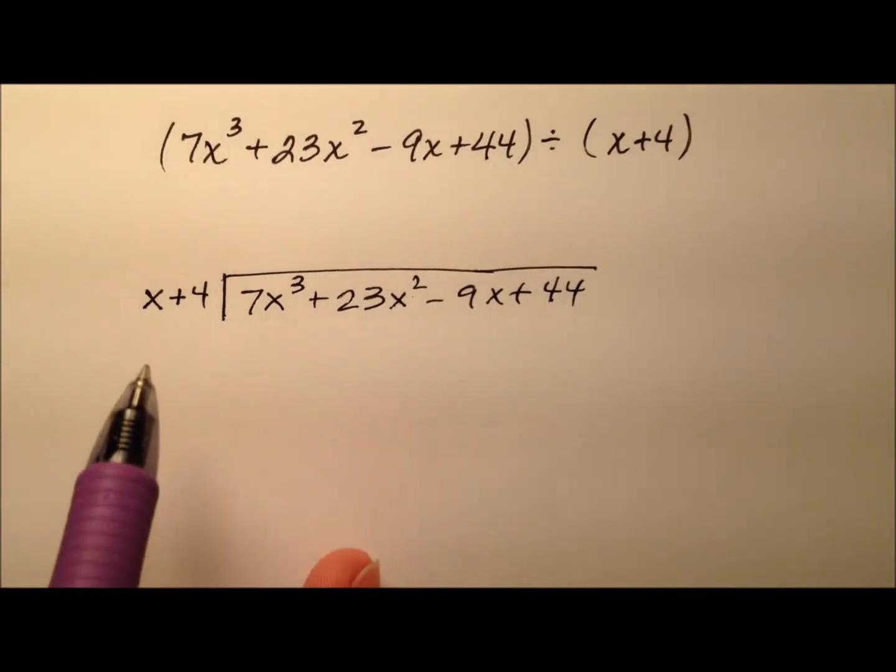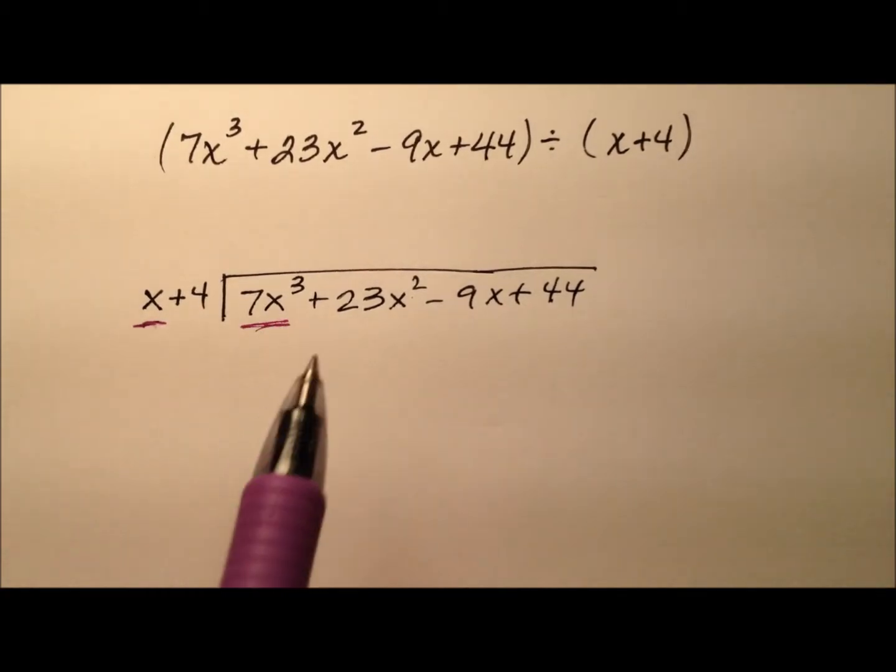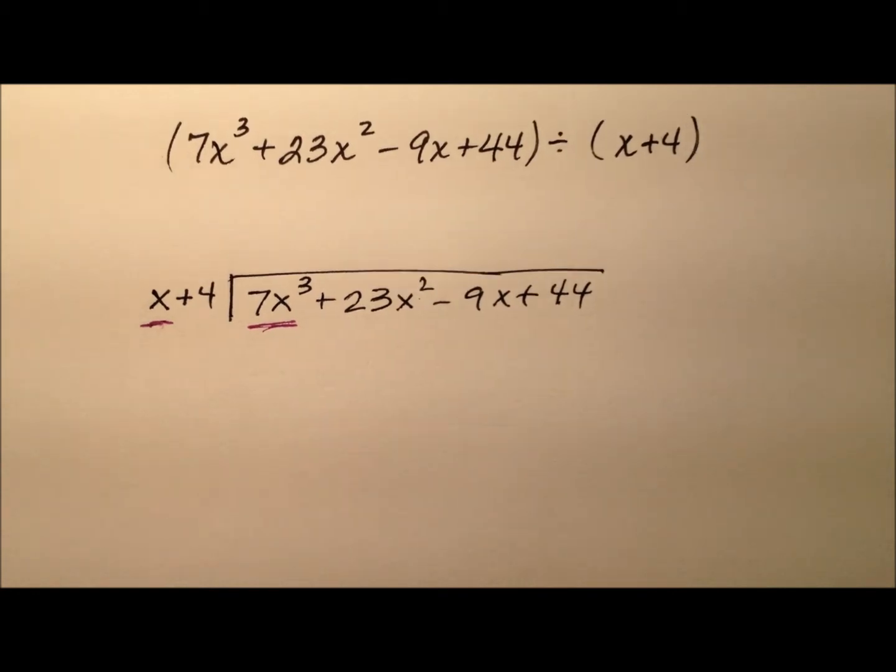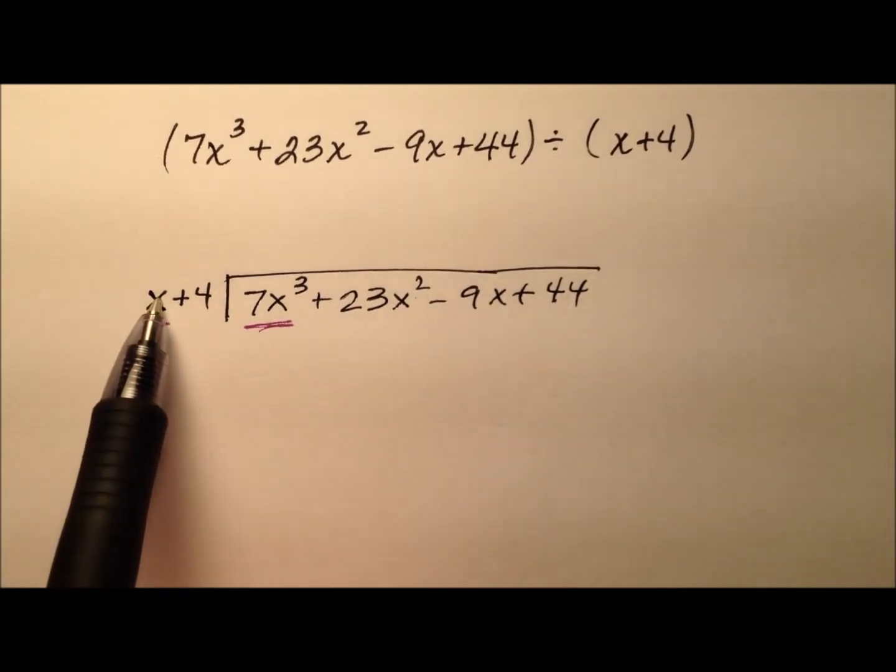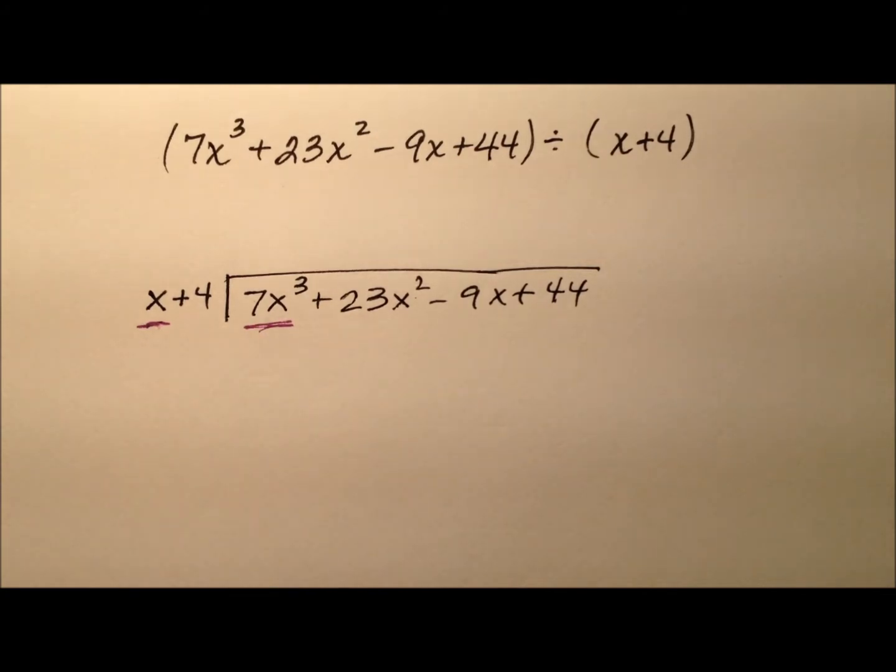I'm going to look at the leading terms first for each of these and I'm going to ask myself, what do I need to multiply by x to get 7x cubed? And of course that answer is 7x squared.